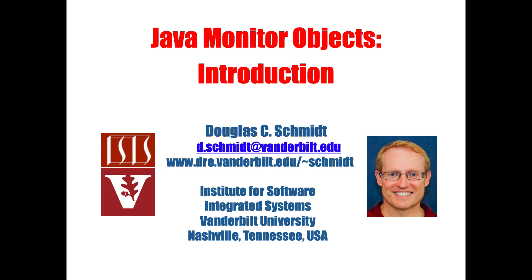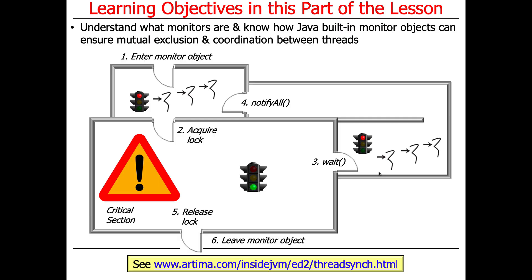We're going to start a new topic today. In some ways, this is a return to the more fundamental parts of Java. We'll be talking about something called Java Monitor Objects, which have been around for a long time — originally part of the Java 1.0 release. We'll talk about what a monitor is and how Java provides built-in support for monitor objects that implement something called the Monitor Object Pattern. We'll show how this provides both mutual exclusion and coordination between threads trying to access critical sections within objects.